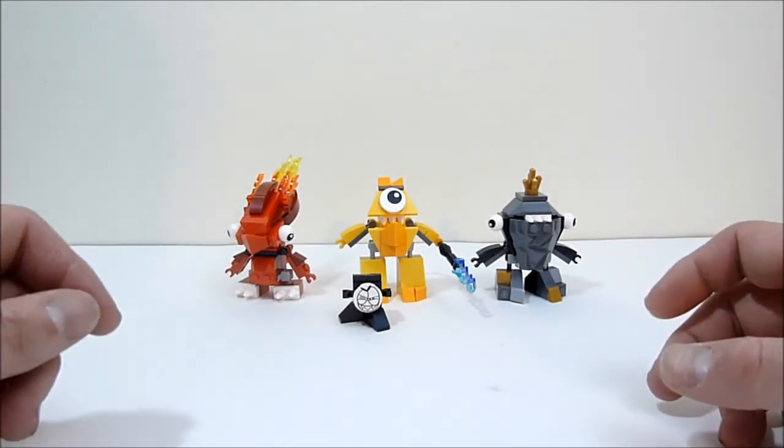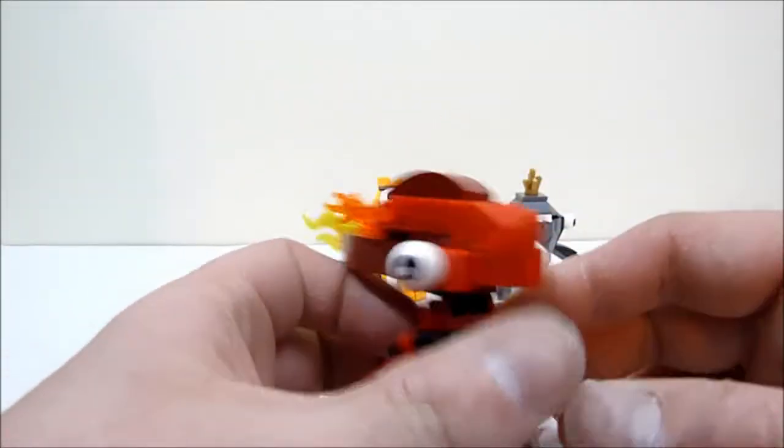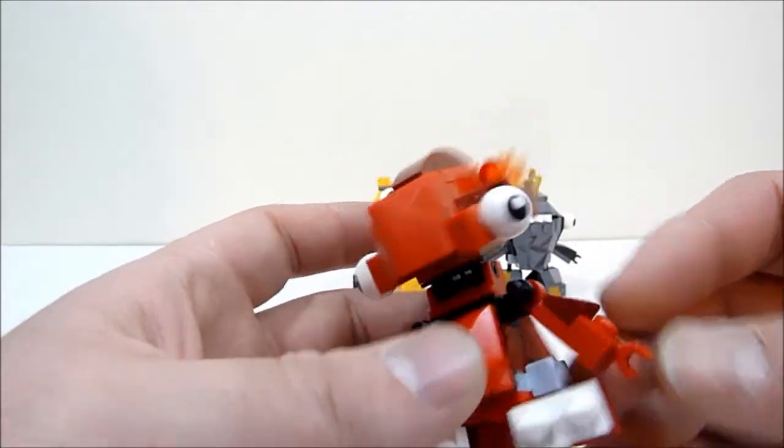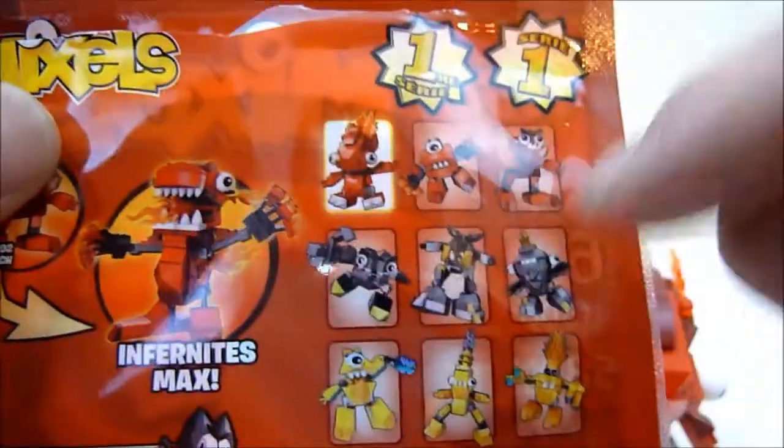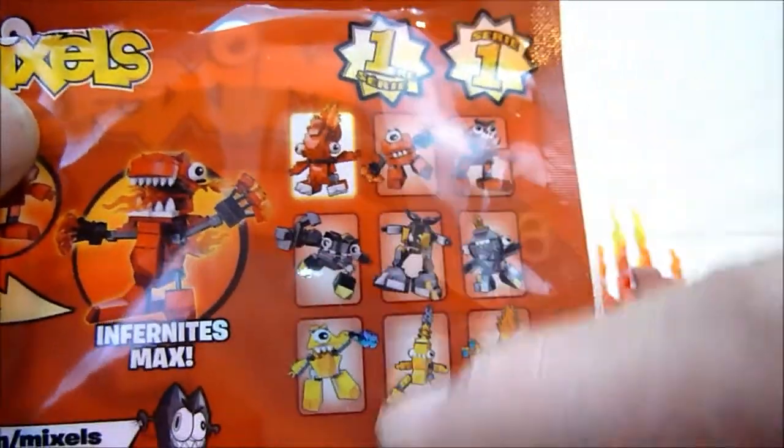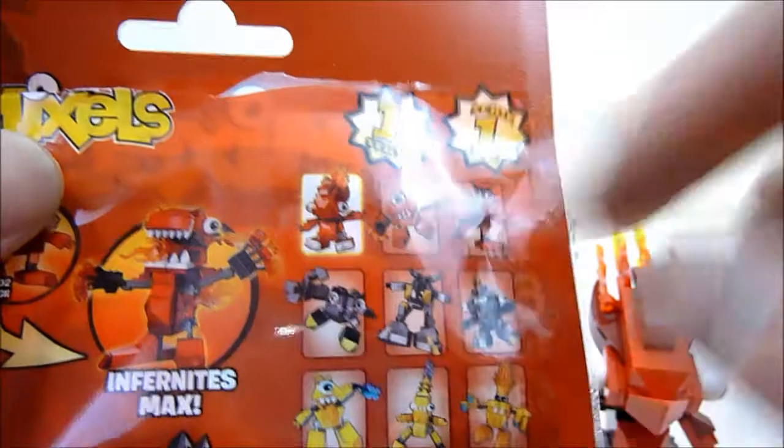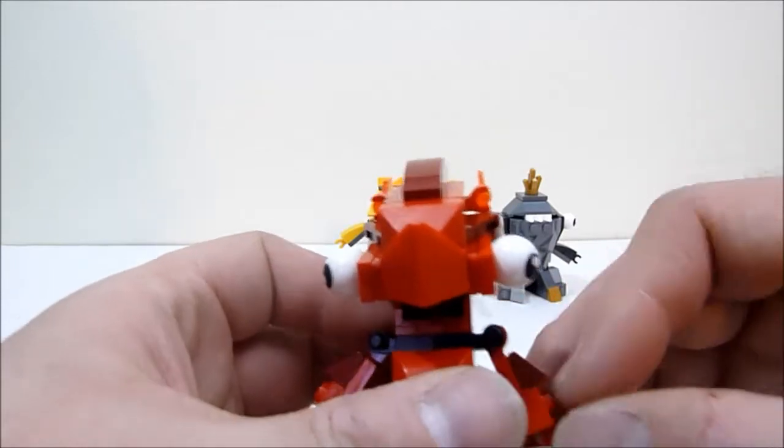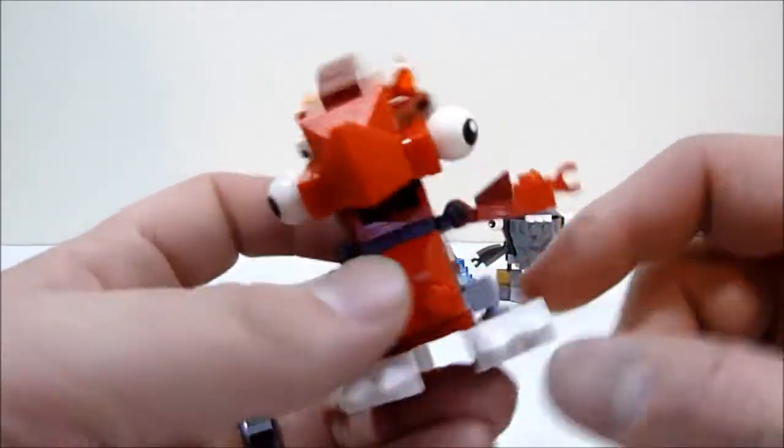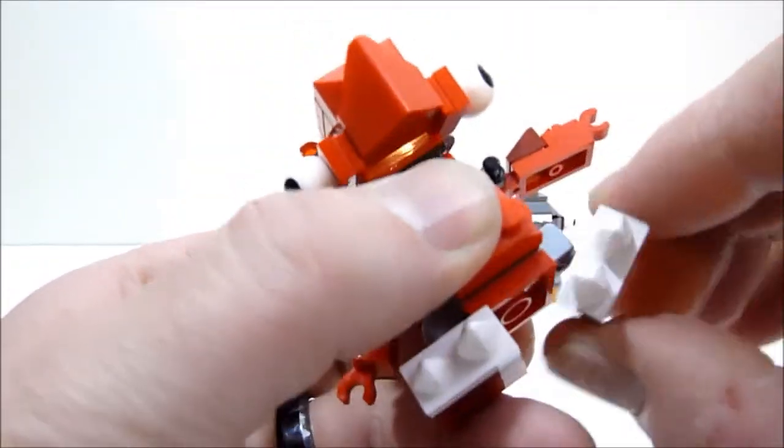We'll start off with Flain, one of the fire guys. He looks kind of bird-like. All of the ones I got come with different body types. I got all the guys with little short arms and little short legs. He's got little arms that go up and down, little clip hands, and the new ball joint legs.